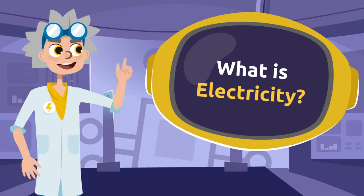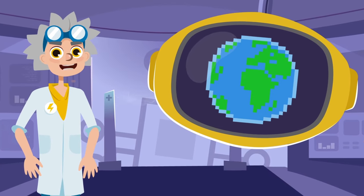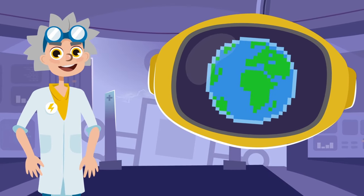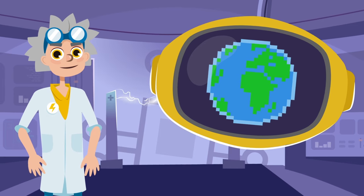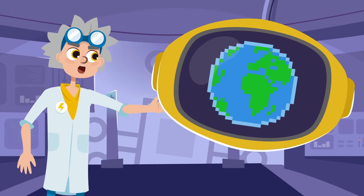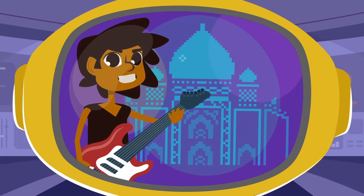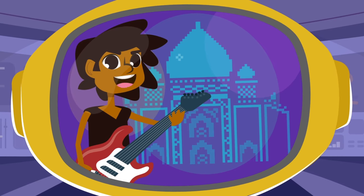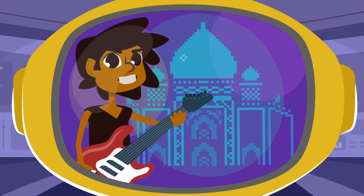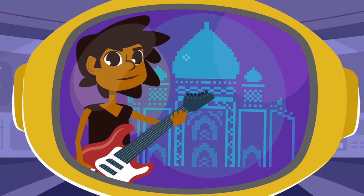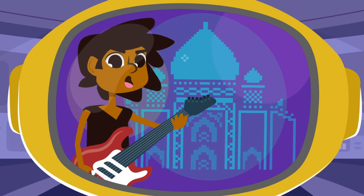For the first part of the show, we asked some children from around the world to explain what they know about electricity. Let's connect with our first friend. "Hi guys! Electricity is something we need to power our electronic devices, such as televisions or my electric guitar."